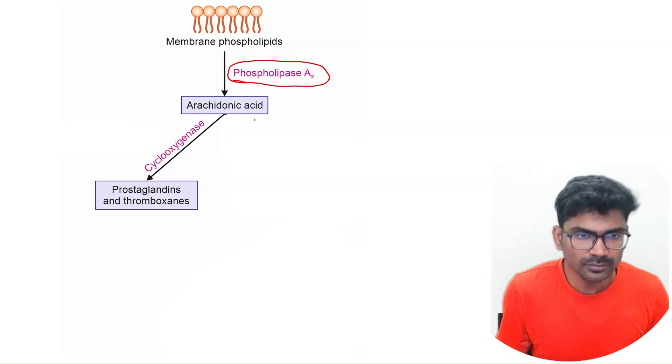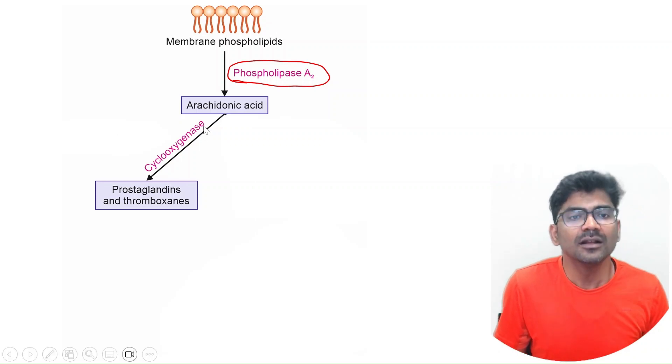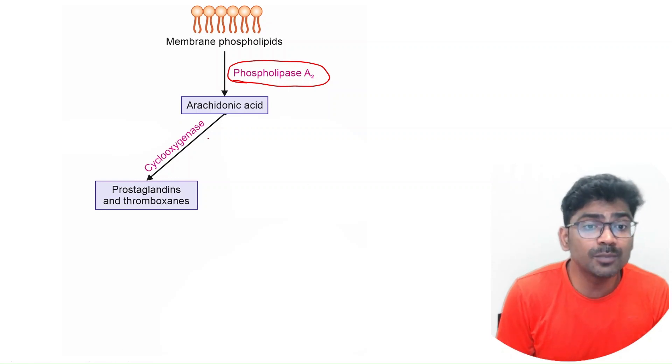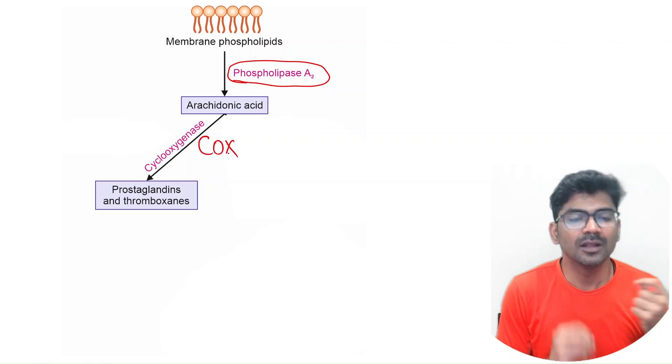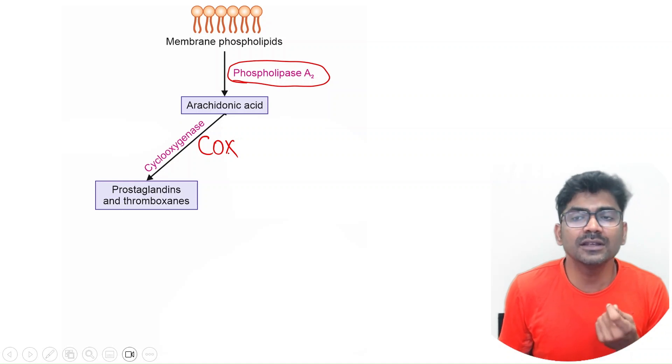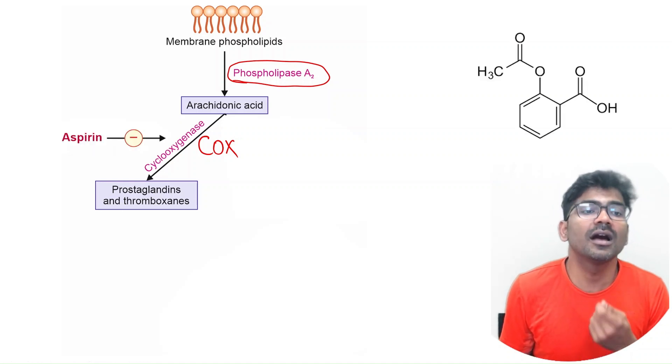As we have seen, prostanoids are produced from COX pathway. The enzyme cyclooxygenase is inhibited by aspirin.